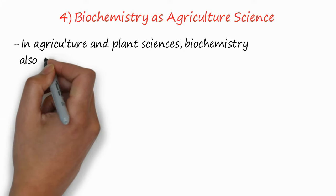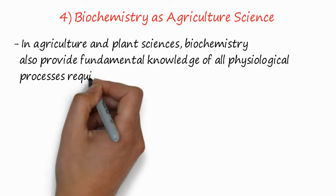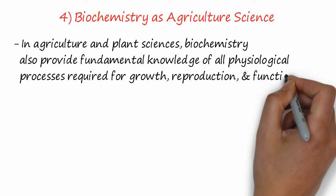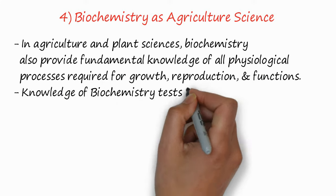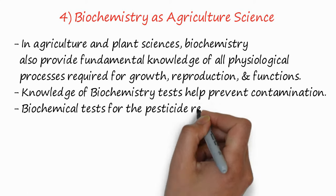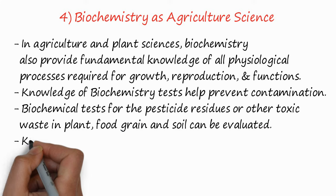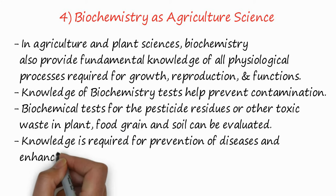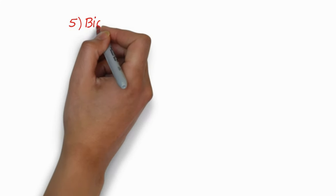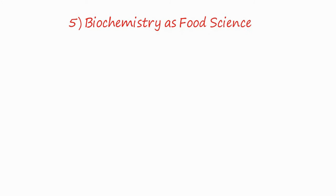Biochemistry is also an agricultural science. In agriculture and plant sciences, biochemistry provides fundamental knowledge of all physiological processes required for growth, reproduction, and functions. Biochemical tests help prevent contamination — pesticide residues or other toxic waste in plants, food grains, and soil can be evaluated. This knowledge is required for the prevention of disease and enhancing the yield or growth of plants and agricultural products.